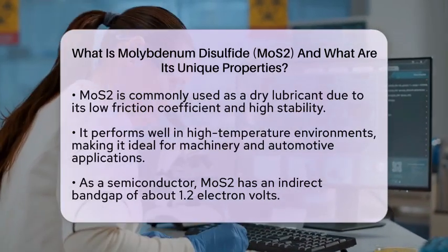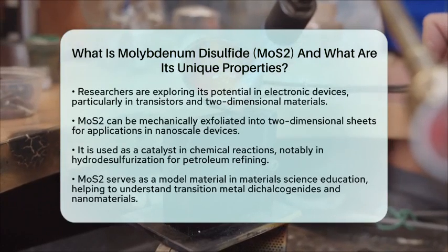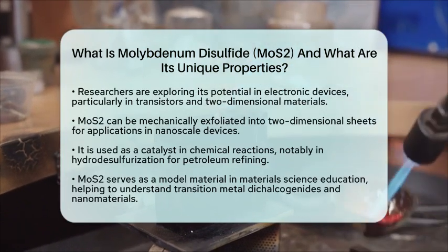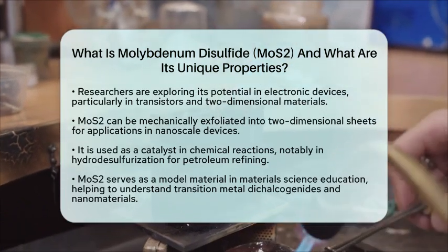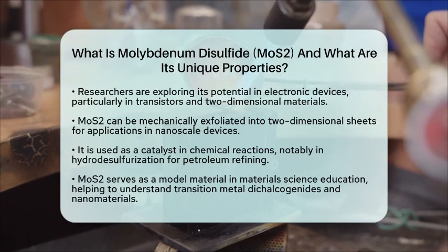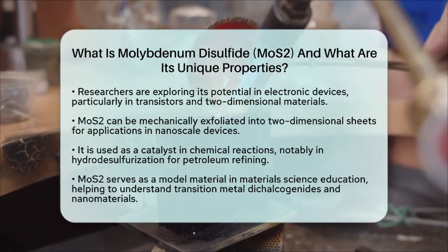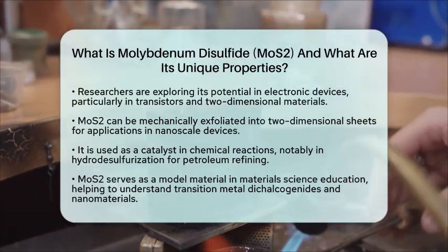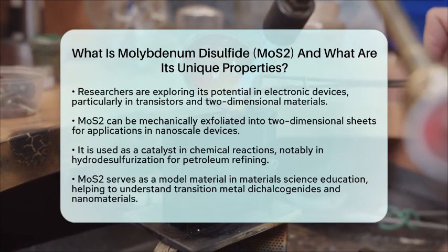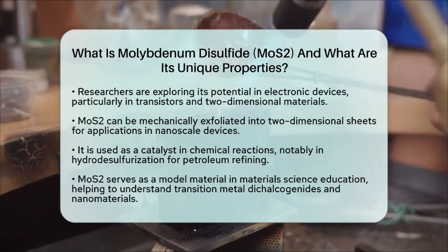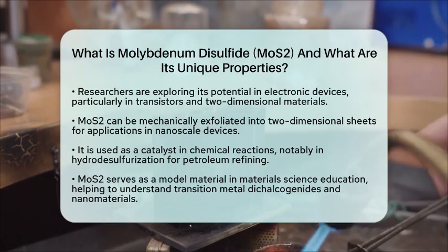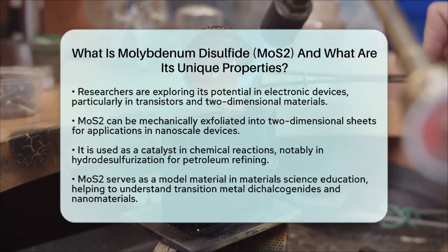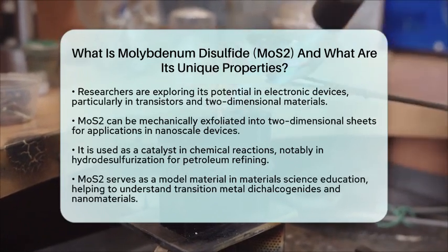Molybdenum disulfide is also utilized as a catalyst in various chemical reactions. One notable application is in the hydrodesulfurization process, which is essential in petroleum refining to remove sulfur from fuels. In materials science and chemistry education, MoS2 serves as an excellent model material for understanding transition metal dichalcogenides and two-dimensional materials, with its layered structure and semiconductor properties providing a rich area for study and research in developing nanomaterials and advanced electronic devices.